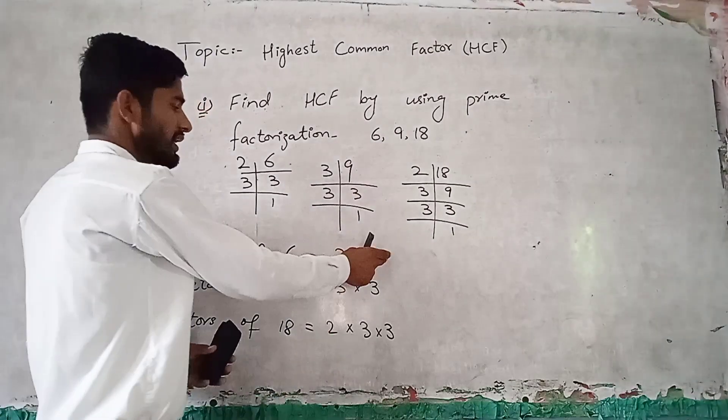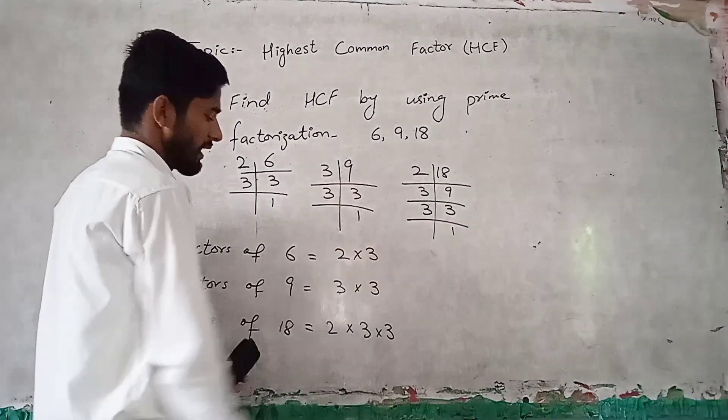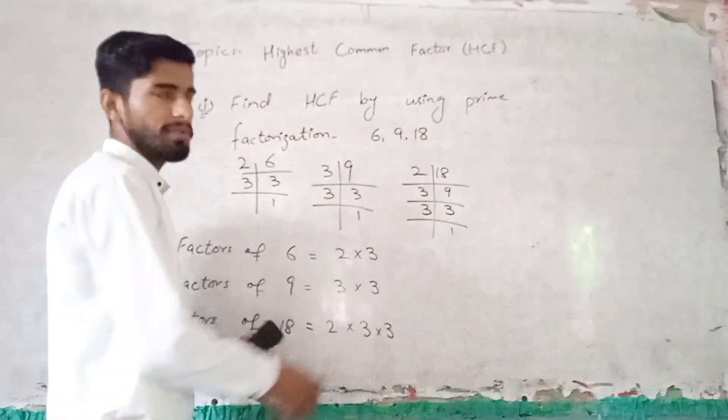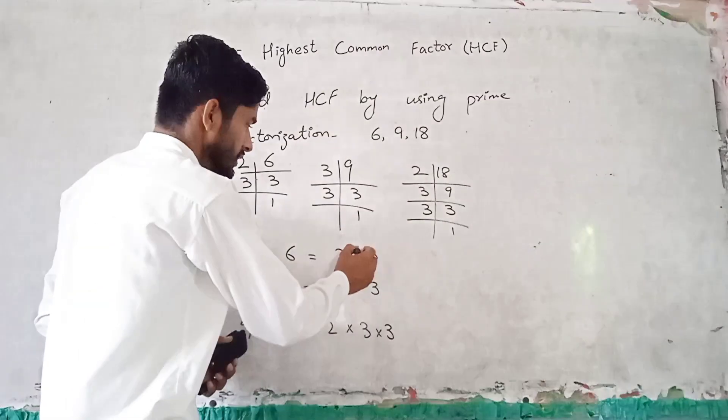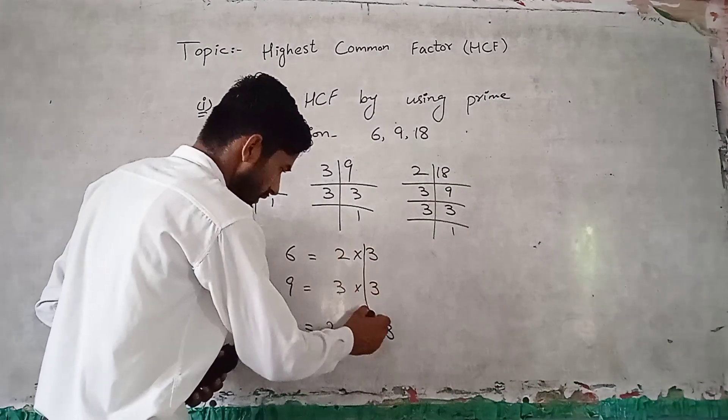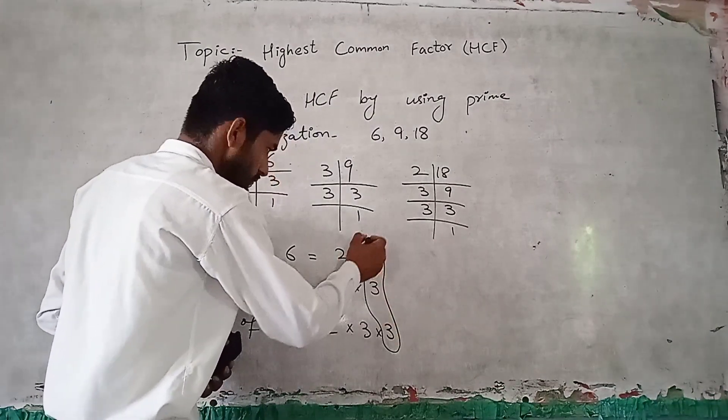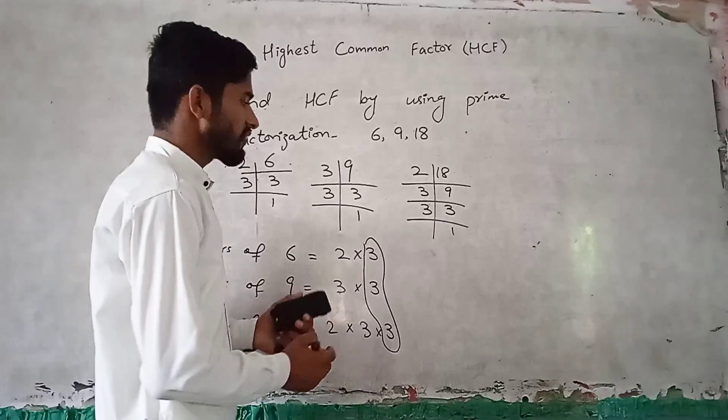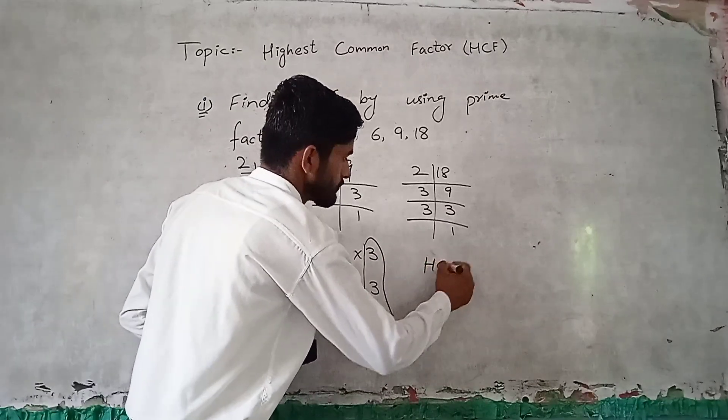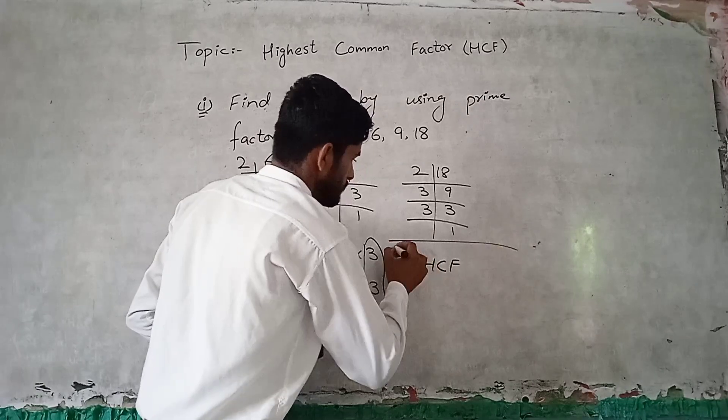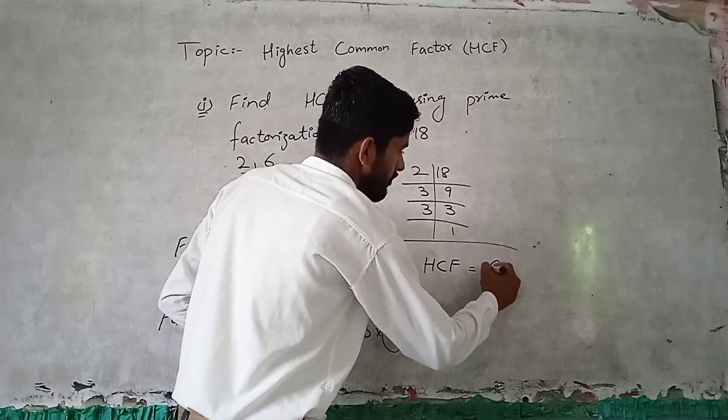Look, there is a three here, here, and here. This is circled, this is circled, this is circled. So this is circled - the common factor.